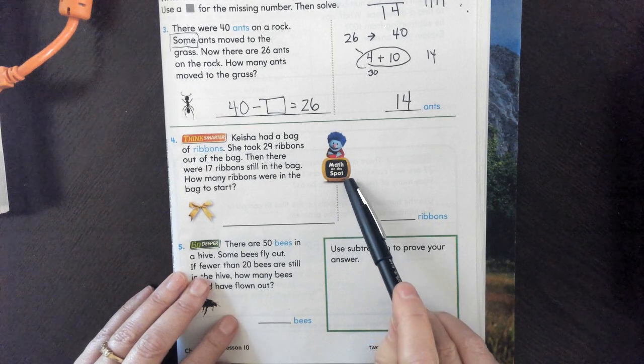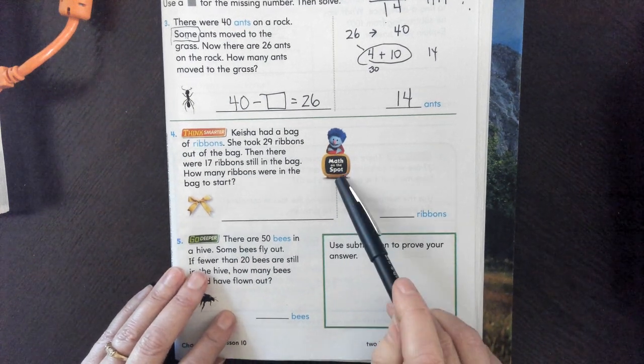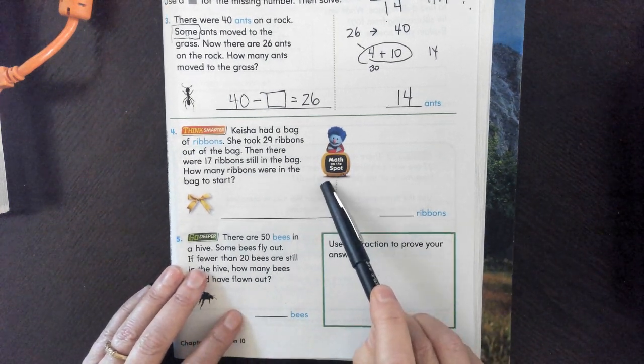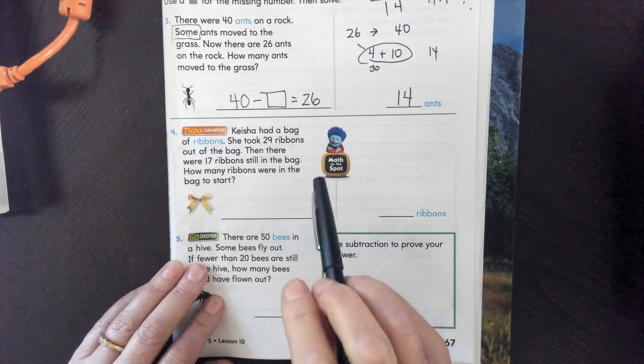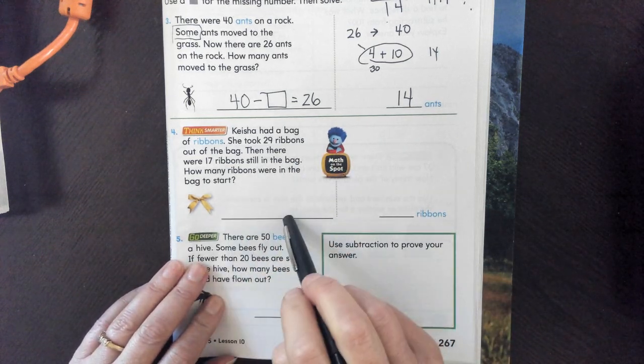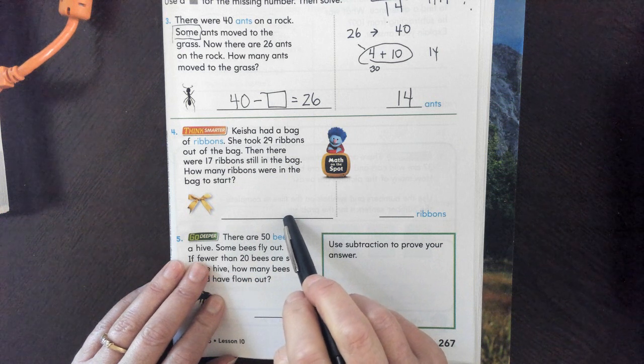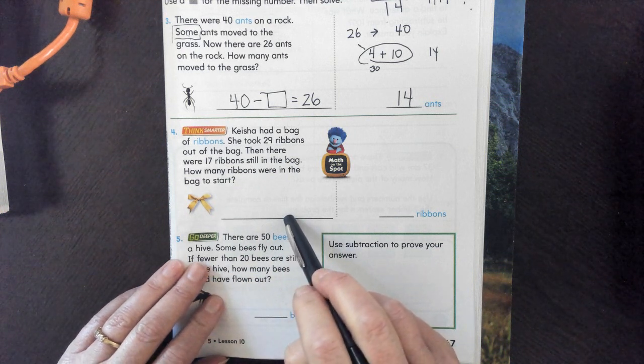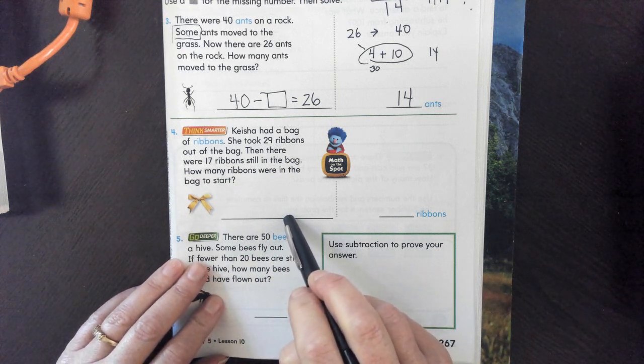Math on the spot video. You can find your own math on the spot videos through your Clever. If you look for math on the spot and you go to Chapter 5, Lesson 10 in 2nd grade, you'll find that video. If you want to stop and find it, go for it and then come back. Otherwise, try it on your own.